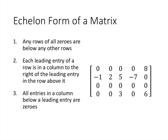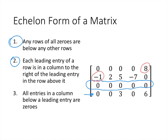Here's a matrix. Let's check to see if it's in echelon form. Starting with condition 1: are any rows of all zeros below any other rows? We do have a row of all zeros, but it's not below all the other rows — there's another non-zero row below it, so condition 1 is not satisfied. For condition 2, each leading entry has to be in a column to the right of the leading entry in the row above it. That doesn't work either, because the leading entry in the second row is in a column to the left of the leading entry in the first row.